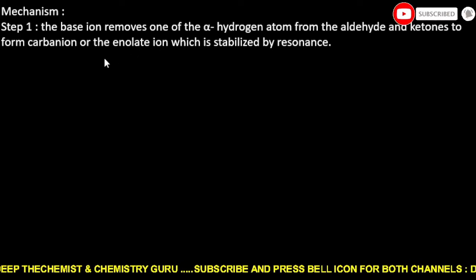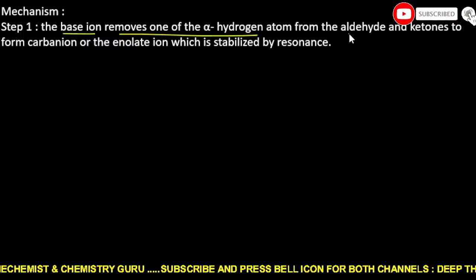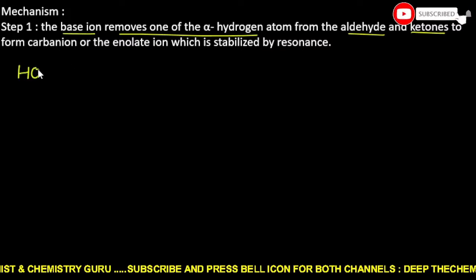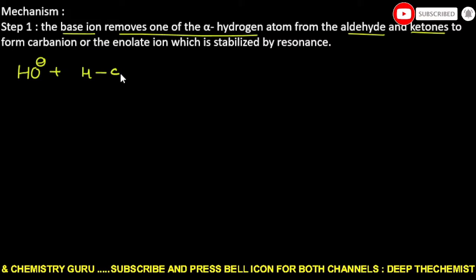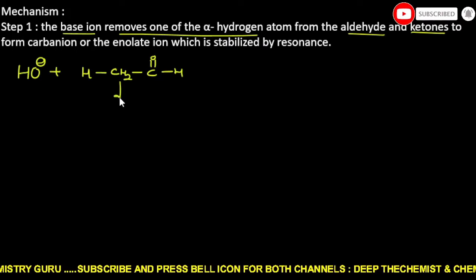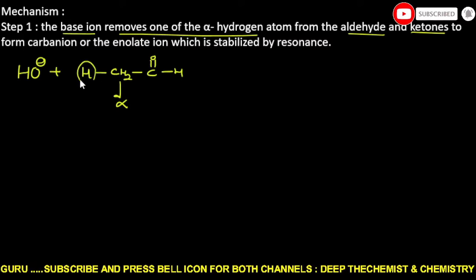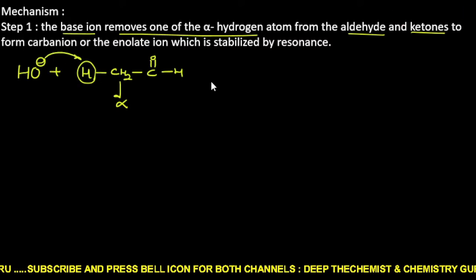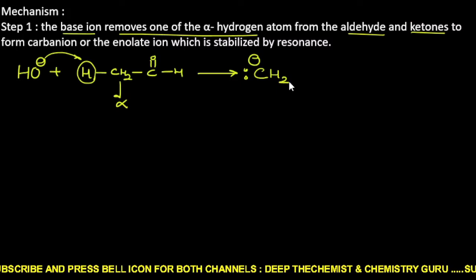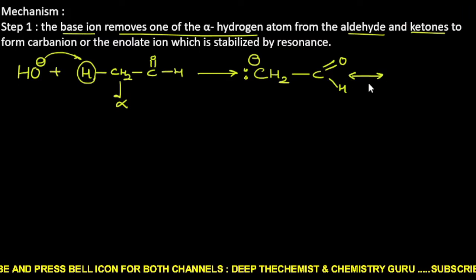In the three-step mechanism, the first step is that the base removes one alpha hydrogen atom from the aldehyde or ketone that has alpha hydrogen. In acetaldehyde, the alpha hydrogen is acidic in nature, so it reacts with the base. After reacting, a carbanion is formed — a carbon with a negative charge — and this carbanion is resonance stabilized.